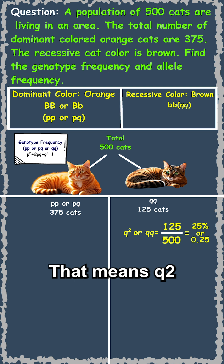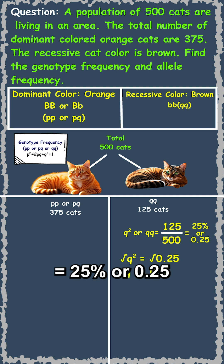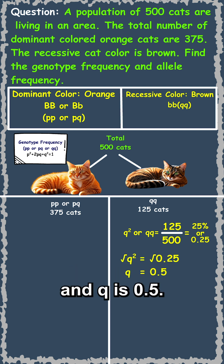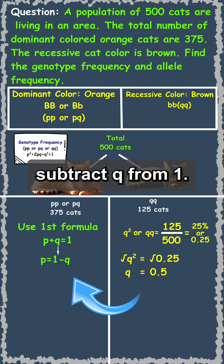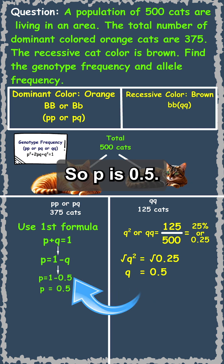This means q² is equal to 25% or 0.25, and q is 0.5. Now to find p, we just subtract q from 1. So p is 0.5.